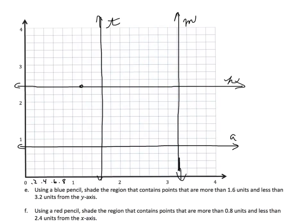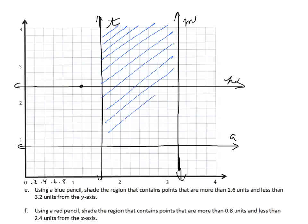Task E: using a blue pencil, shade the region that contains the points that are more than 1 and 6 tenths units and less than 3 and 2 tenths units from the y-axis. We want more than 1 and 6 tenths but less than 3 and 2 tenths — so we shade the area between lines T and M with our blue pencil. Task F: using a red pencil, shade the region containing points that are more than 8 tenths and less than 2 and 4 tenths units from the x-axis — we shade the area above line A but below line H with red.